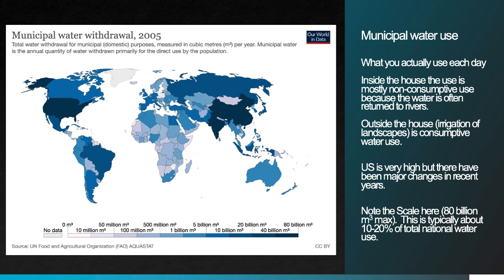In the United States, somewhere on the order of 10 to 20 percent of water use is municipal, versus almost half that is agricultural.